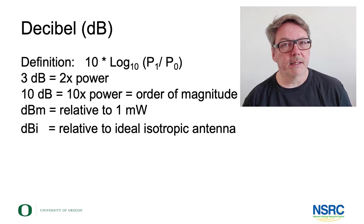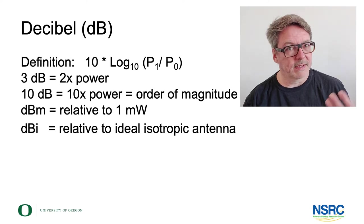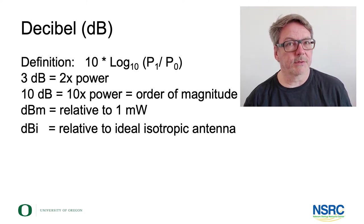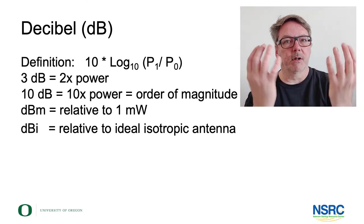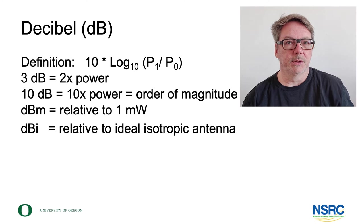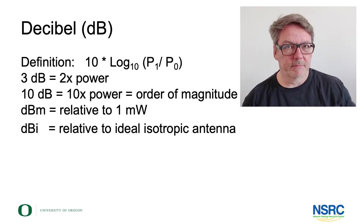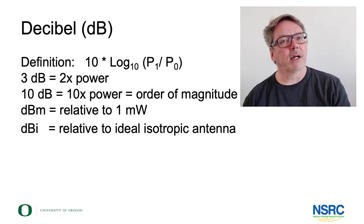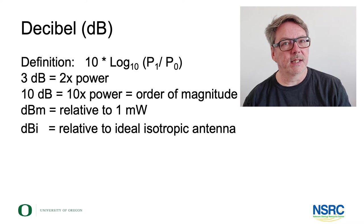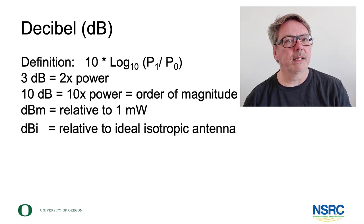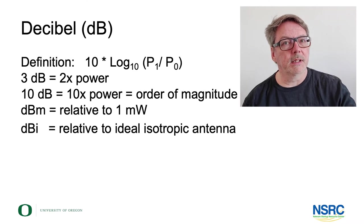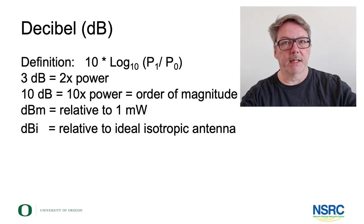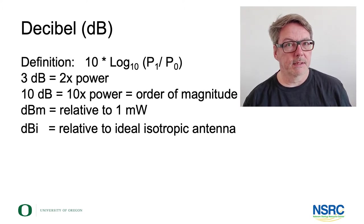Similarly, in antenna descriptions you often see the dBi. The dBi is dB relative to an isotropic antenna, which is a theoretical concept — an isotropic antenna would radiate in all directions with equal strength. You can't build such an antenna; it's an idea rather than reality. A directional antenna described in dBi is that much stronger in a certain direction compared to this all-directions antenna.